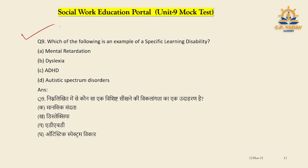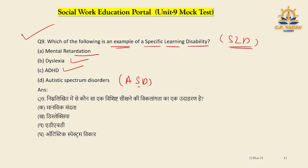Dyscalculia refers to difficulty in mathematical calculation — addition, subtraction, and multiplication. So dyscalculia is the correct answer. Question number nine: Which of the following is an example of SLD (Specific Learning Disability)? Options include mental retardation, dyslexia, ADHD, and autism spectrum disorder. Dyslexia comes under learning disability, so it is the correct answer.